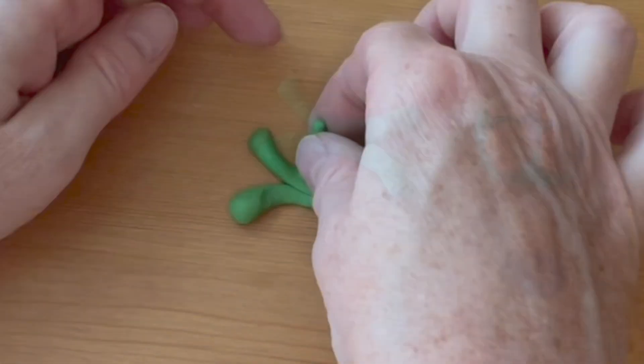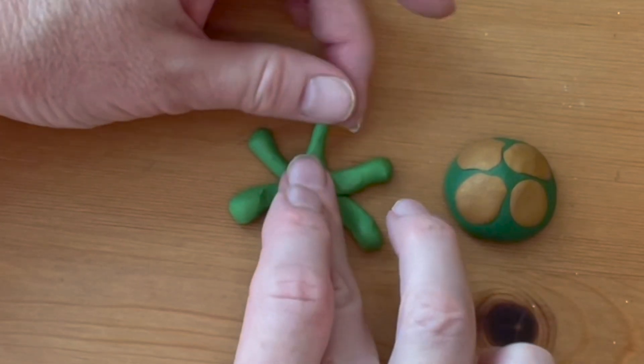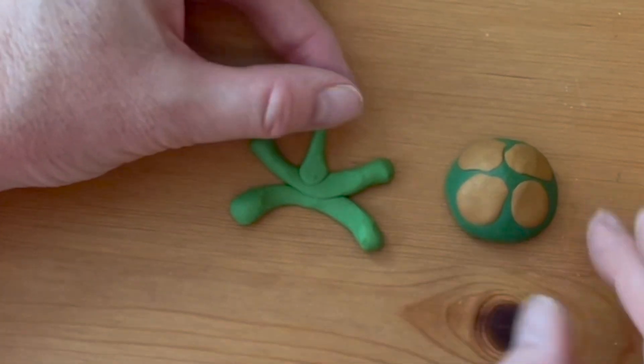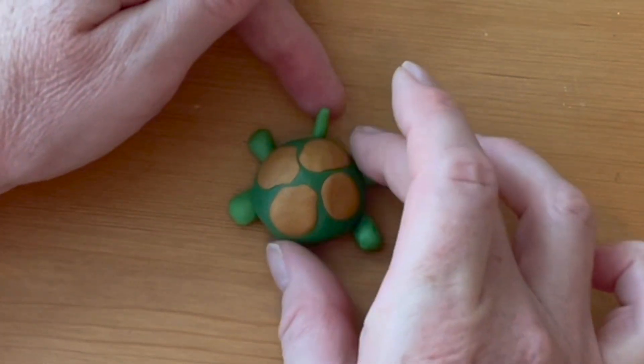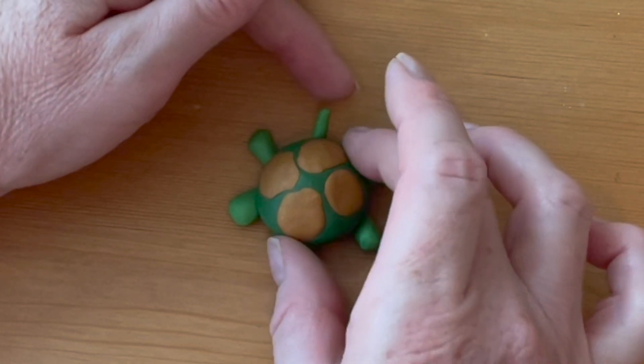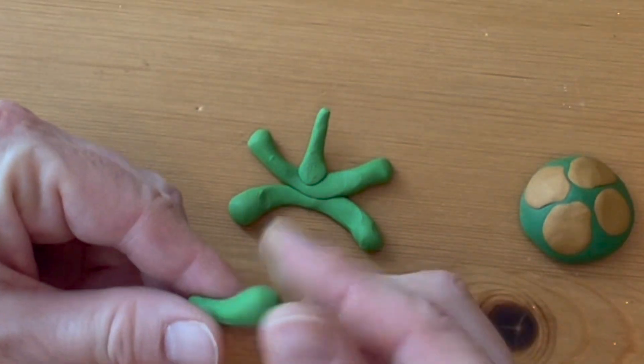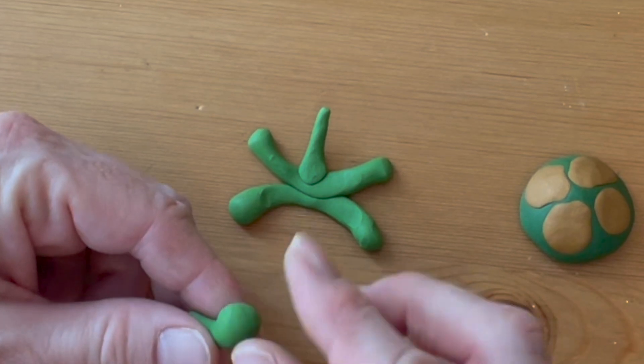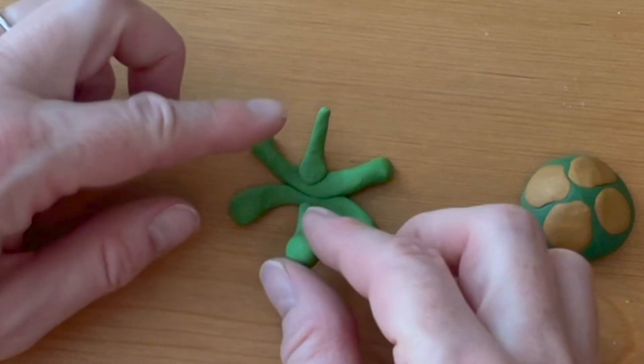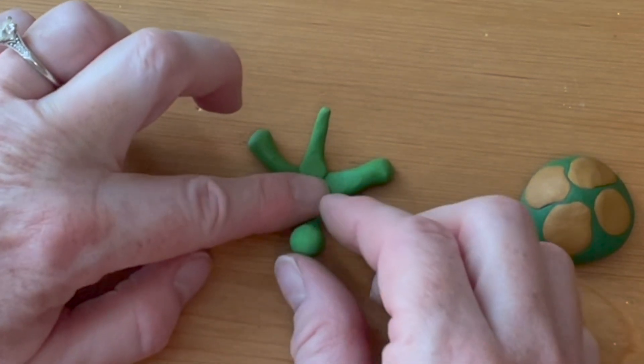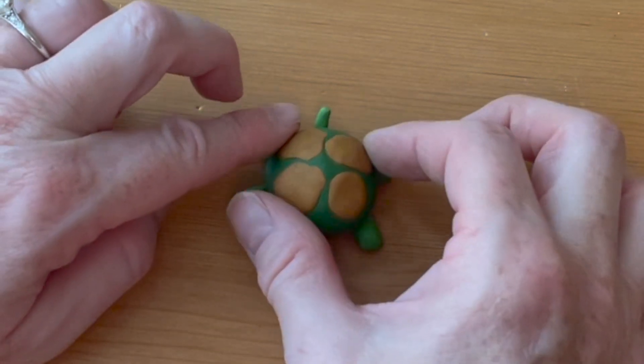Remove the shell again and now make a little tail. Stick it on the middle so it's attached to the legs. Make sure it's in the right spot and then make a head which is like an elongated teardrop and turn the head up at the end so the turtle's looking up at us.